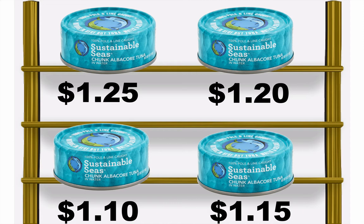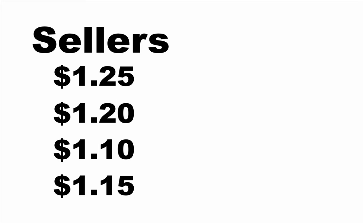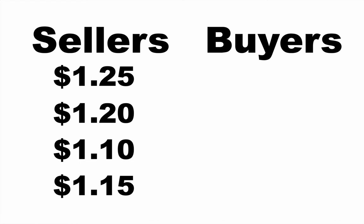They want a certain profit, they have certain expenses to take care of, and they know what their revenue is — so that enables them to choose a price. They list these prices out; this is what the sellers want to sell their tuna for. In this analogy, the tuna is the stock. But what will it sell for? What will the price be? Who decides? Well, there are people selling at certain prices, and there are buyers who want to buy it. Let's say a buyer decides they're willing to spend $1.15 — they've decided that the tuna is worth that much.